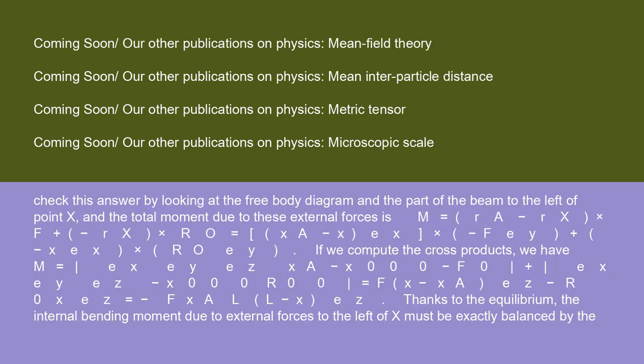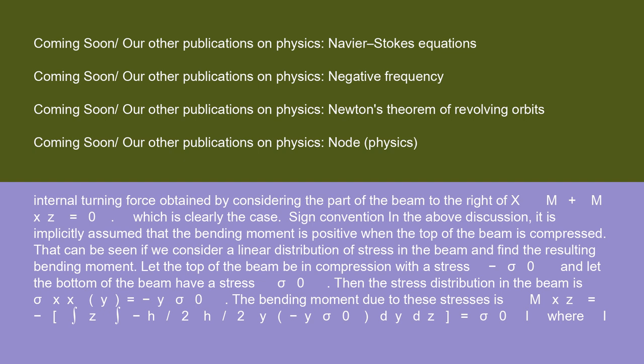Now to obtain the internal bending moment at x, we sum all the moments about the point x due to all the external forces to the right of x on the positive x side. And there is only one contribution in this case, M_xz = (r_B - r_x) × R_B = |e_x, e_y, e_z; L-x, 0, 0; 0, R_B, 0| = F·(x_A/L)·(L-x)·e_z. We can check this answer by looking at the free body diagram and the part of the beam to the left of point x. And the total moment due to these external forces is M = (r_A - r_x) × (-F) + (-r_x) × R_O = (x_A - x)·e_x × R_O·e_y. If we compute the cross products, we have M = -F·(x_A/L)·(L-x)·e_z. Thanks to the equilibrium, the internal bending moment due to external forces to the left of x must be exactly balanced by the internal turning force obtained by considering the part of the beam to the right of x. M + M_xz = 0, which is clearly the case.